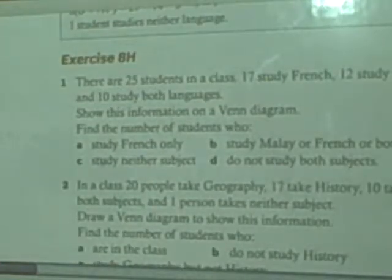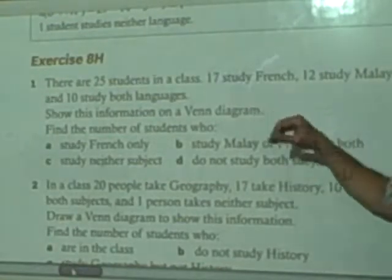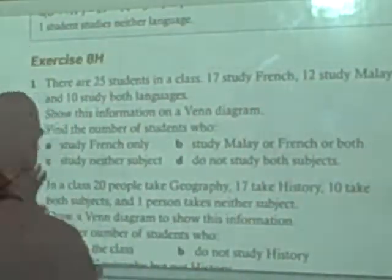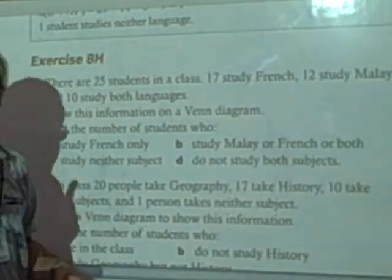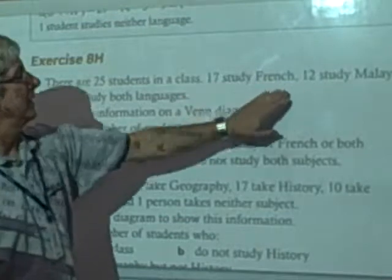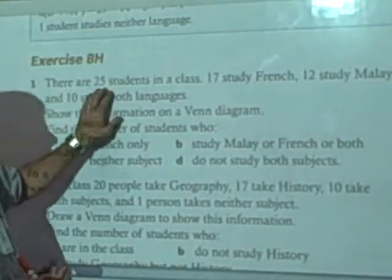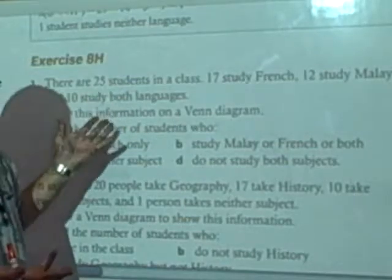We have 25 students in class, 17 study French, 12 study Malay, 10 study both languages. And as the book says at the beginning, it might immediately seem like a contradiction if you add these up. 17 and 12 is 29, and 10 more makes 39, but there's only 25 students in class. How can that be?